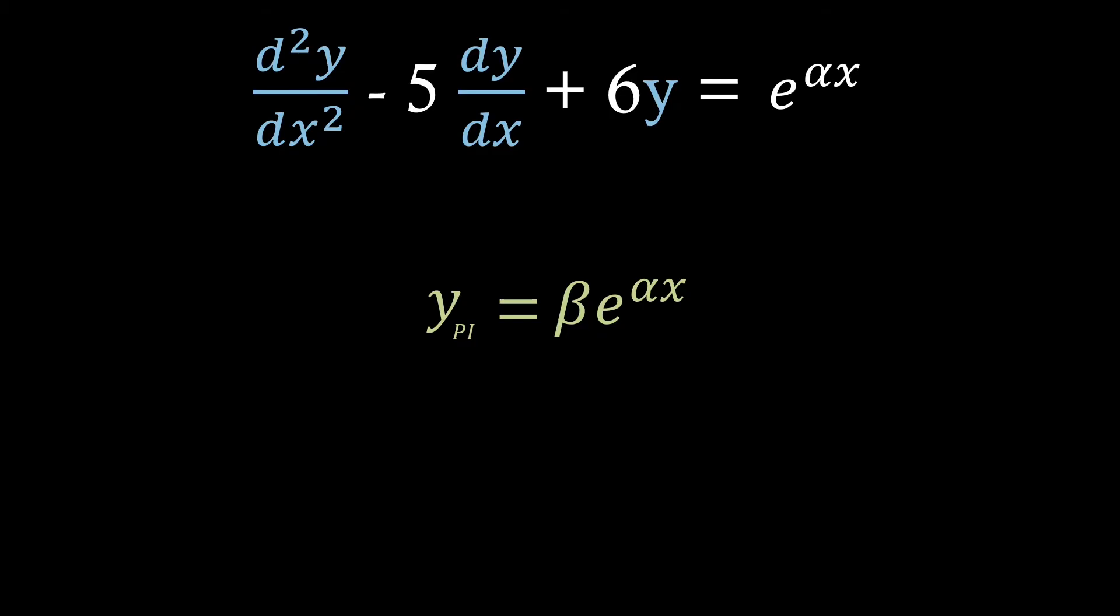Say we had a combination of these forms, what we would do is we would try a solution where we sum each of the individual forms.